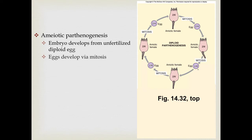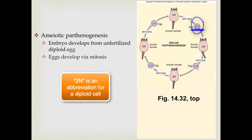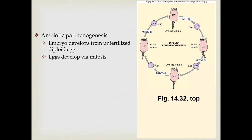Sometimes eggs are involved in the production of genetic clones, which we call amyotic parthenogenesis. A female — in this case a female rotifer — produces an egg, but instead of typical haploid eggs, they produce diploid eggs. This diploid egg turns into a genetic clone of the female. It's a female laying a diploid egg that produces another genetically identical diploid female. In mitosis, you produce cells with exactly the same amount and type of DNA, so producing clones.